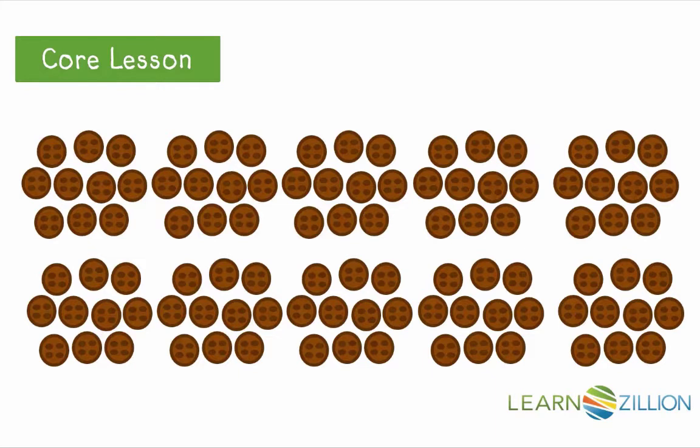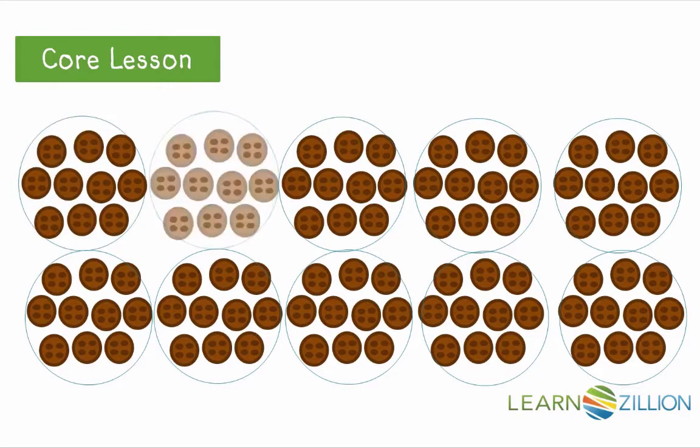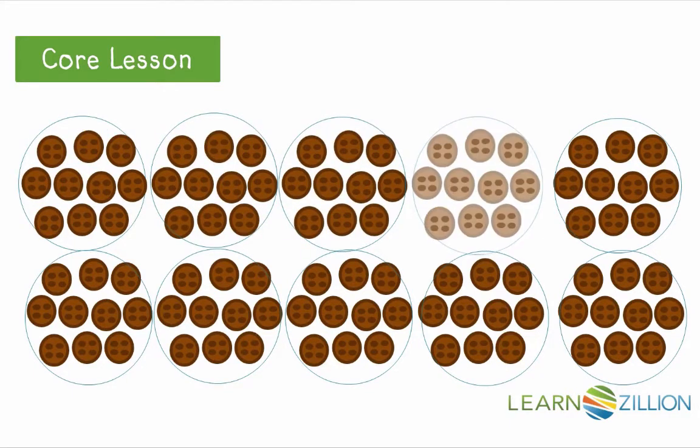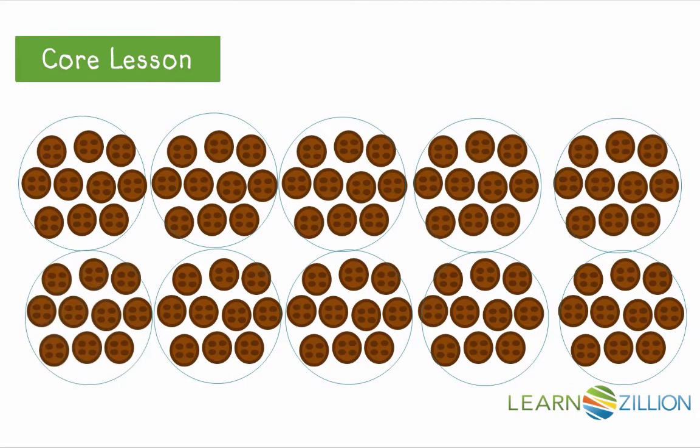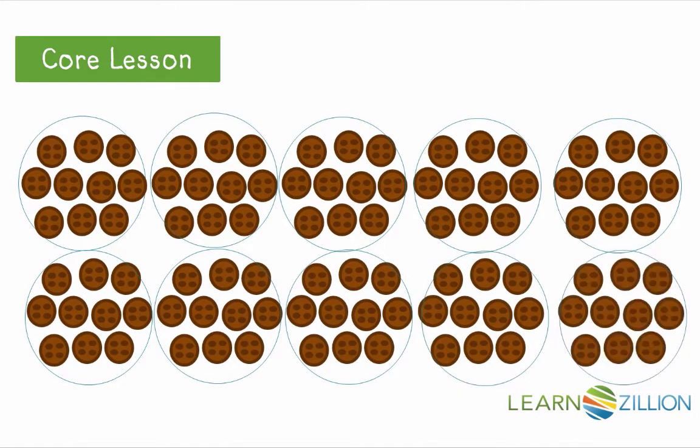Now, if we combine these cookies in groups of 10 like this, we can easily count by tens to see how many cookies are here. Let's count by tens. 10, 20, 30, 40, 50, 60, 70, 80, 90, 100. Wow, there are 100 cookies here.